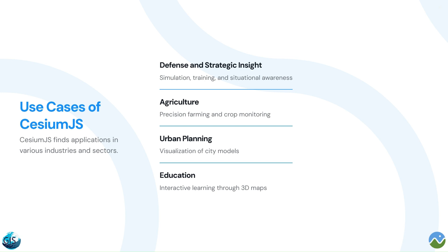For urban planning, CesiumJS is employed to visualize city models — for example, CityGML data — aiding urban planners in making informed decisions and creating more efficient urban spaces. Finally, one of the most important use cases from my point of view is educational engagement: enhancing the learning experience by integrating CesiumJS into educational content and allowing for interactive exploration through 3D maps.